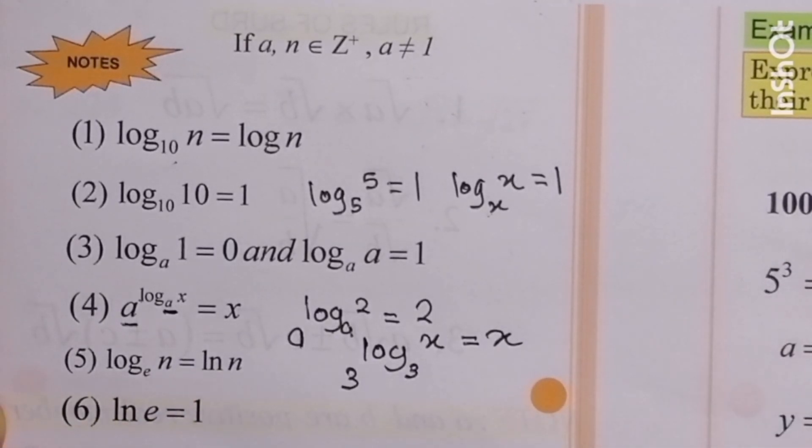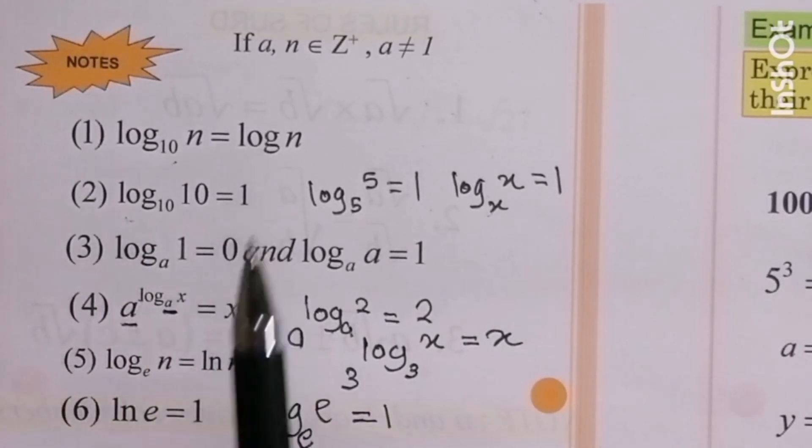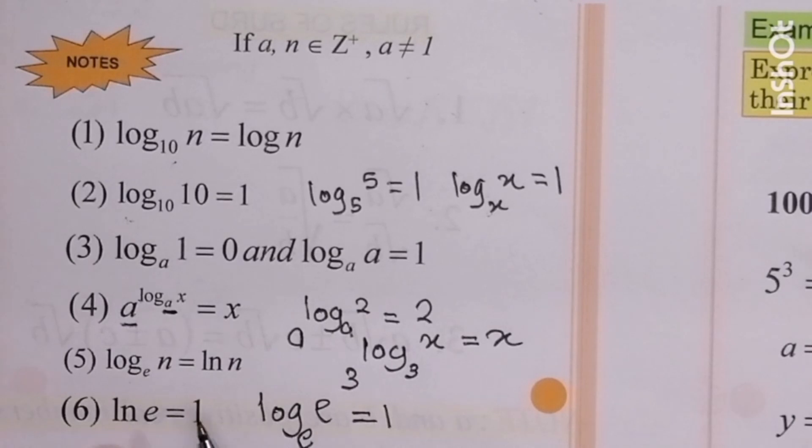Number 5: log n base e, e for exponent, equal to ln n. Or we can rewrite in short form ln n. And log or ln e equal to 1, because ln is log e base e. We follow property number 2, the answer is 1. Log 10 base 10 equal to 1, ln e also equal to 1.